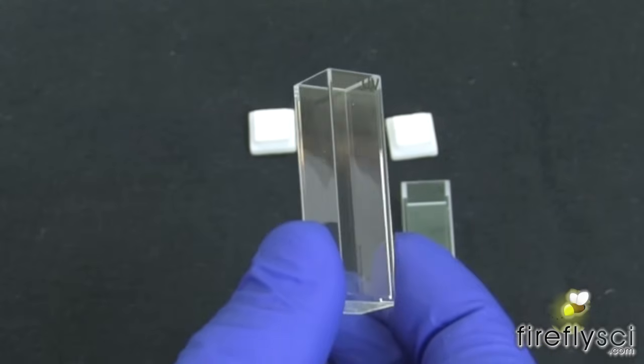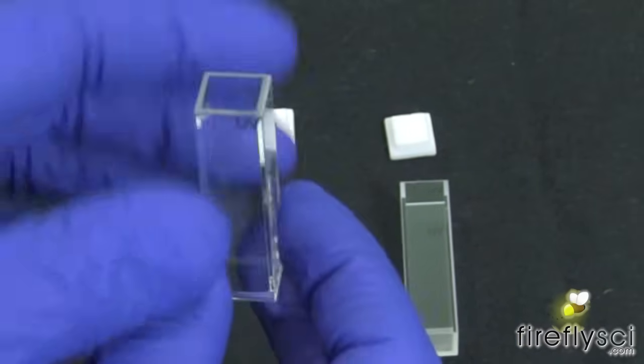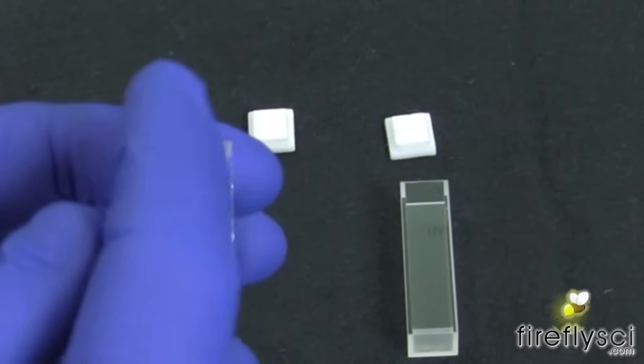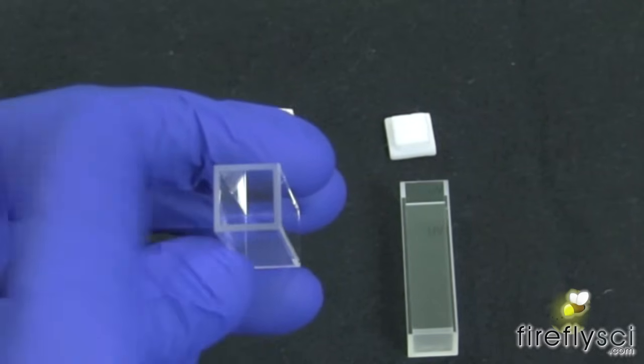This type of cell will also work in a spectrophotometer but it allows the light to go in the front window right in here, and it can exit the side window at 90 degrees. So the light goes in here and comes out this direction.